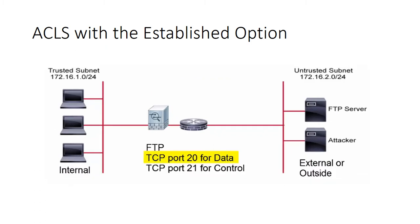Another example of how the above ACL would function is to take a close look at an FTP connection. FTP uses two separate ports: TCP port 20 for FTP data and TCP port 21 for control traffic. If we consider that a client workstation on a trusted network initiates an FTP connection to an FTP server on the external untrusted network, the initiating packet from the client will set the SYN flag and present the client's initial sequence number.